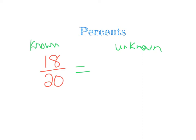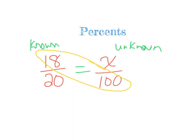Using proportions: I know 18 out of 20, so that's my known. My unknown is what I got out of 100 — because percents are always out of 100. So I set up 18 over 20 equals x over 100. Using what we know about proportions, we cross-multiply: 18 times 100 is 1800, and then 1800 divided by 20 gives me 90. That means I got a 90% on this test.